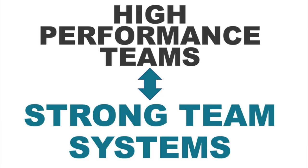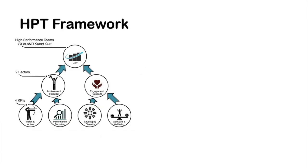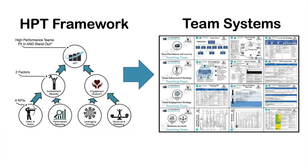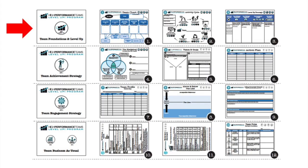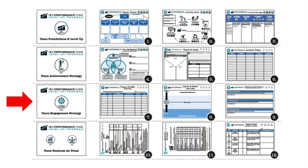So we're heading downstream, shall we say. When we're building high-performance teams, we're building really strong team systems, and we take that HPT framework and turn it into a series of team systems. Specifically, we're talking about a system of understanding foundations, then another about the team achievement strategy, the team engagement strategy, and of course business as usual — our meetings and metrics.